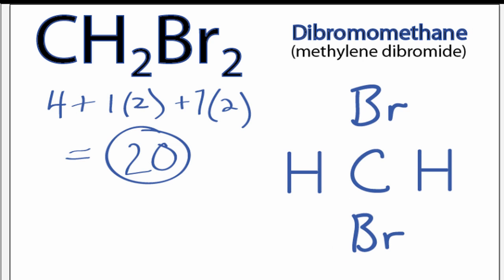We have 20 valence electrons for the CH2Br2 Lewis structure. We'll put two between atoms to form chemical bonds, and we've used eight valence electrons.